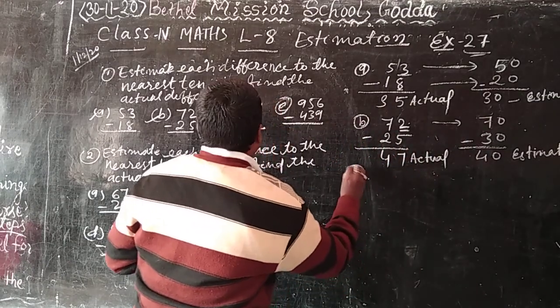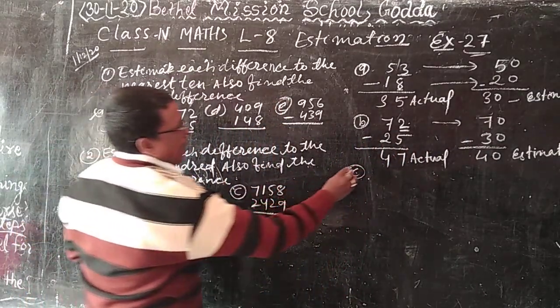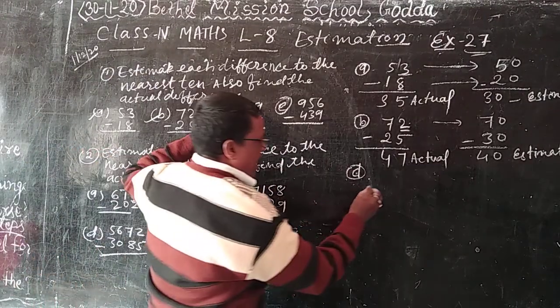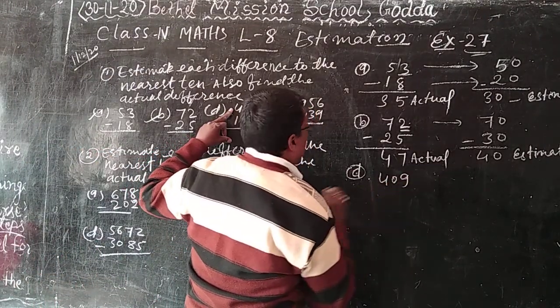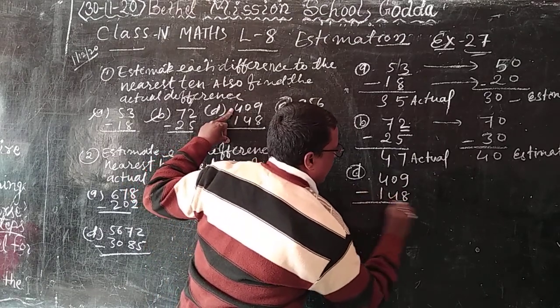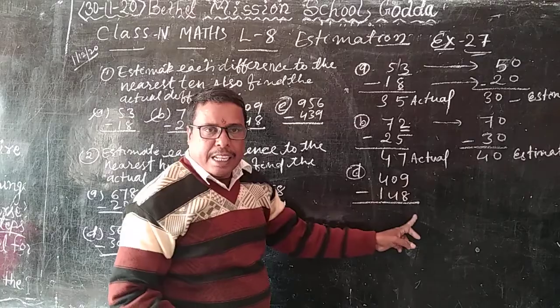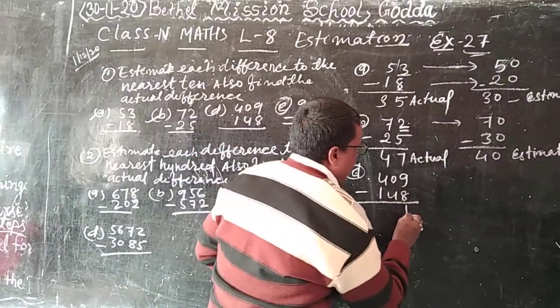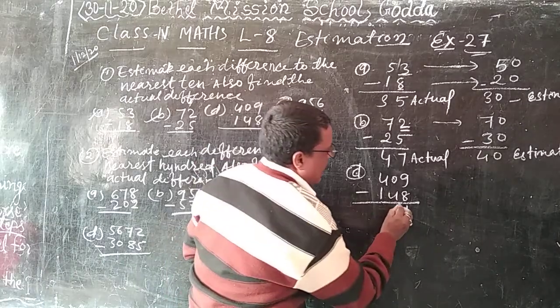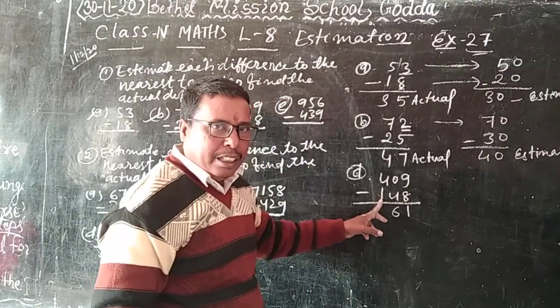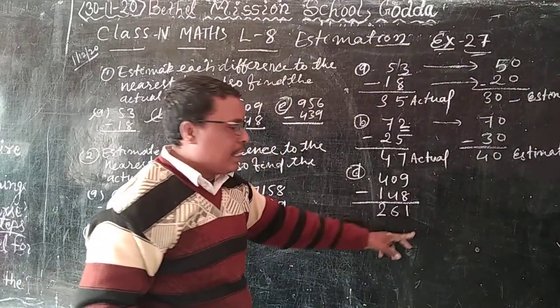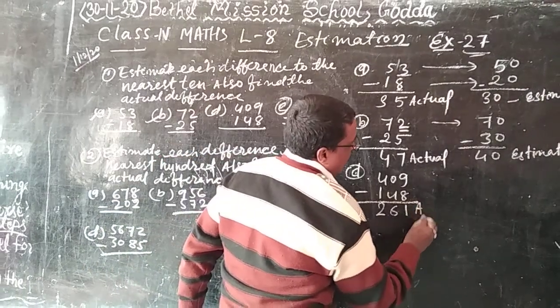C number, 409 minus 148. 9 minus 8, 1. 10 minus 4, 6. 3 minus 1, 2. 261, how much? Actual difference.